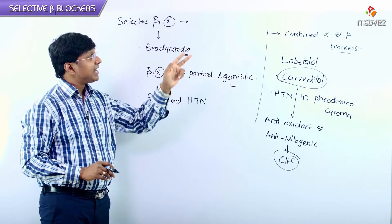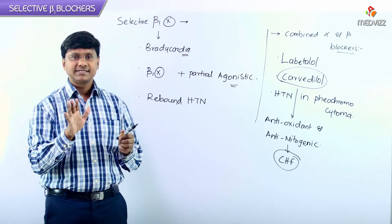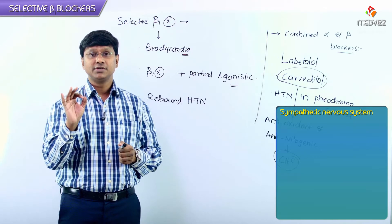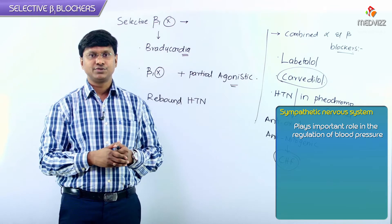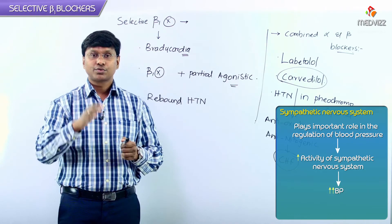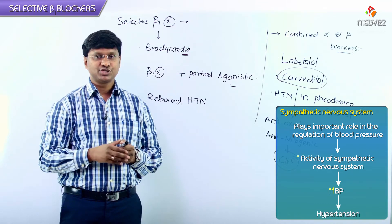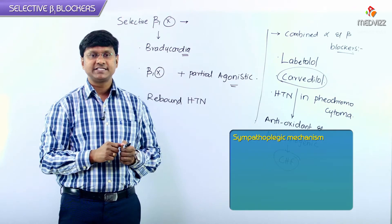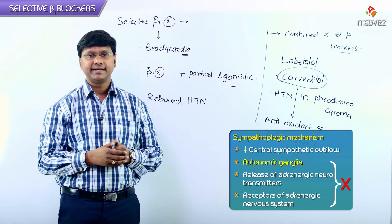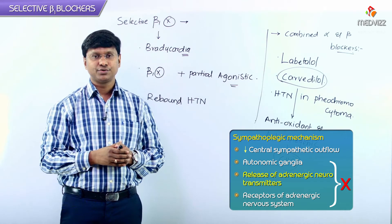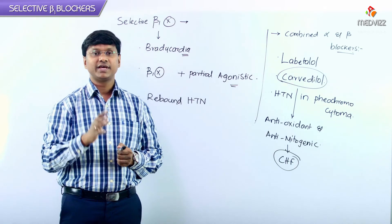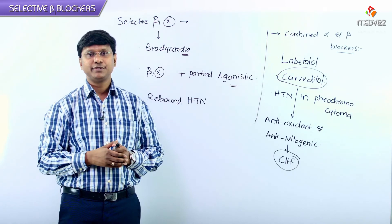So overall, these are the group of drugs which will cause sympatholysis. The sympathetic nervous system plays an important role in regulating blood pressure. If it is excessively stimulated, blood pressure increases. To reduce sympathetic activity in hypertension, there are four approaches: number one, decrease central sympathetic outflow; number two, block autonomic ganglia; number three, block the release of adrenergic neurotransmitters; number four, block adrenergic receptors. Through these four ways, sympatholysis can be achieved and blood pressure reduced.